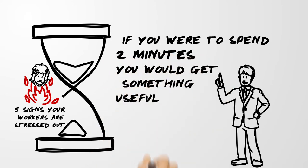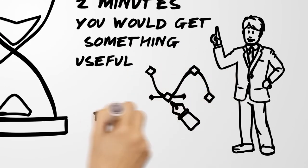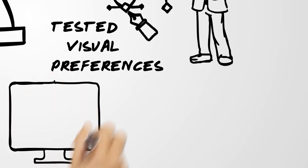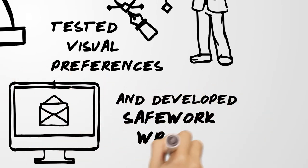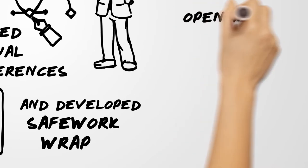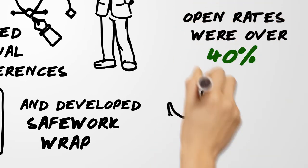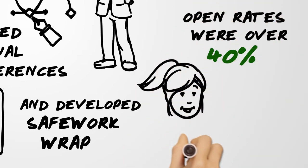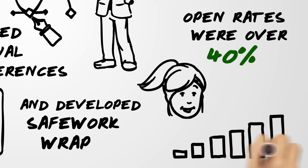We also tested their visual and design preferences, and from those things we developed an e-newsletter called the Safe Work Wrap. Early signs are all positive, open rates over 40 percent, all the indicators suggest that it works, and we're doing some interesting experimentation in that space using some A-B testing.